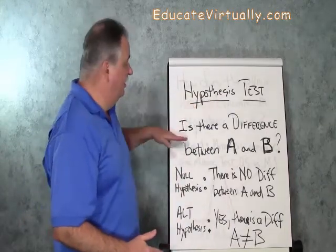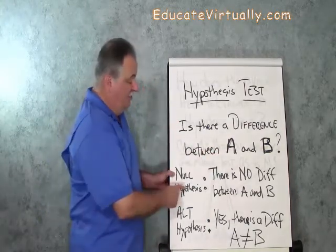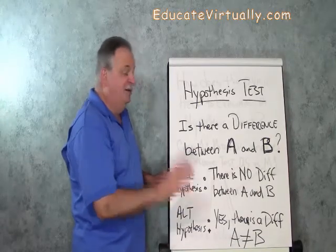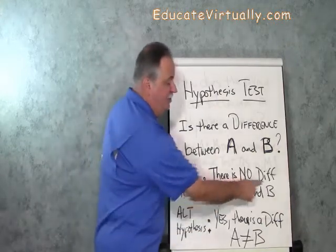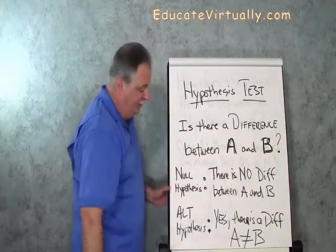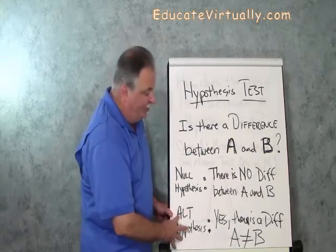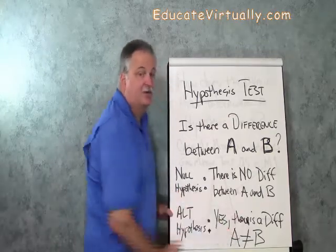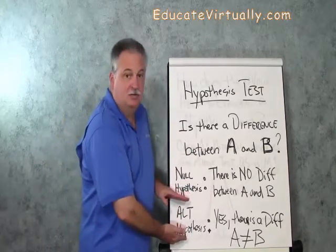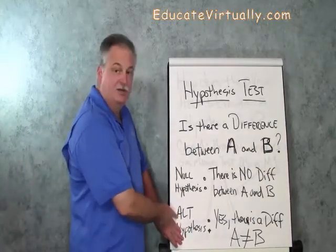Hypothesis tests are designed to find out: is there a difference between, say, A and B? The null hypothesis — and this is important to remember — the null hypothesis is always that there is no difference between A and B. The alternative hypothesis, which often is what we're looking for, says yes, there is a difference between A and B. They're not the same. The P-Value is going to help us to understand which one applies.